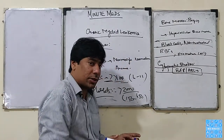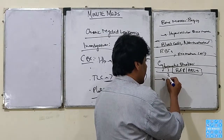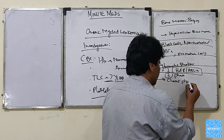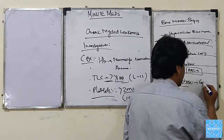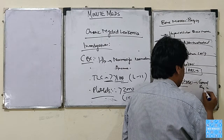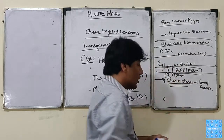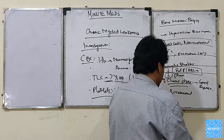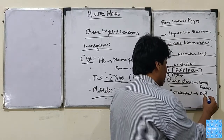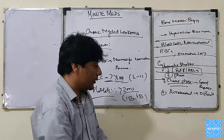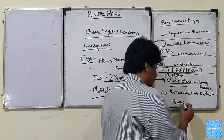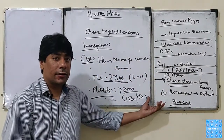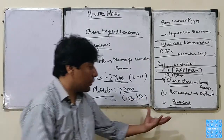Regarding the treatment — one important thing is that chronic myeloid leukemia has three phases. The first is the chronic phase, where the patient has a good response to treatment. The second is the accelerated phase, where we get difficulty. The third is the blast crisis, which is out of hand — the disease morbidity and mortality all depend on the blast crisis.